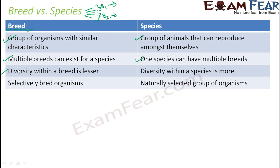Diversity within a breed is lesser — the differences between organisms in the same breed are small. But diversity within a species is more — across the whole species you have organisms quite different from each other. Breeds are selectively bred organisms — they are man-made, created by human beings who artificially selected organisms and mated them to create new breeds. Species, on the other hand, are naturally selected groups of organisms.